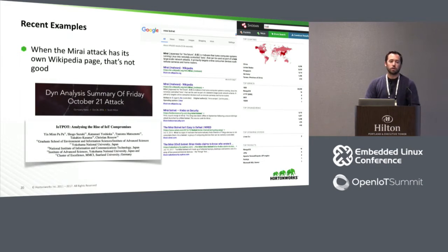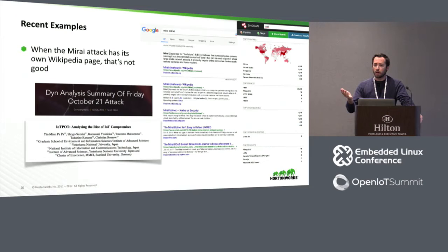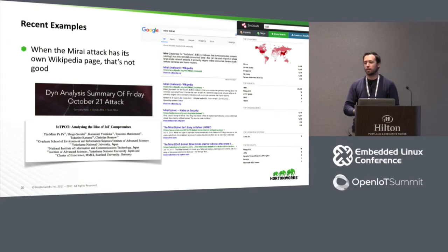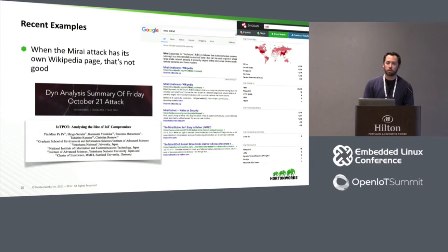Obviously there are more examples than I can list, but you've heard of the Mirai botnet and the Dyn DDoS attack. When it has its own Wikipedia article, that means it's bad — it's no longer just affecting us, it's affecting real people in the world. Has anybody used Shodan before? Shodan is essentially a search engine for the Internet of Things. You type in a protocol or device category — for example 'internet connected cameras' — and it has a graph and indexes of all these devices connected to the network, happily accepting connections with no password required, including MQTT and ICS SCADA systems. If you don't want to sleep tonight, go check out Shodan.